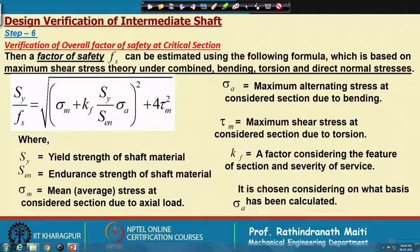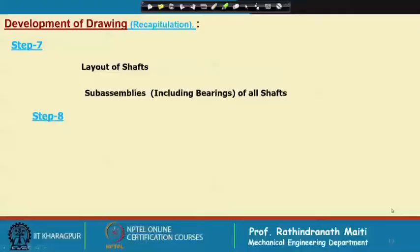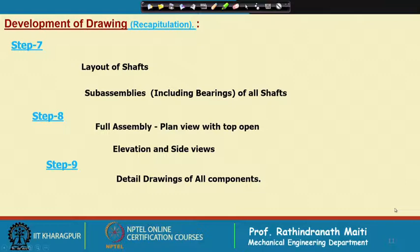Step 7 is the layout of shaft sub-assemblies for all shafts. Step 8 is the full assembly plan view, top elevation, and side view. Step 9 is the detail drawing of all components. The last step is the bill of materials and documentation — you must make the final report of the design calculations and all documentation. That is the last step of the gear design.